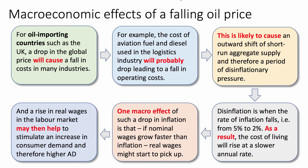For example, the cost of aviation fuel or diesel used in logistics will probably drop, leading to a fall in operating costs. This is likely to cause an outward shift of short-run aggregate supply — can you visualize that in a diagram — and therefore a period of disinflationary pressure. Disinflation is when the rate of inflation falls, for example from five percent to two percent. As a result, the cost of living will rise at a slower annual rate.